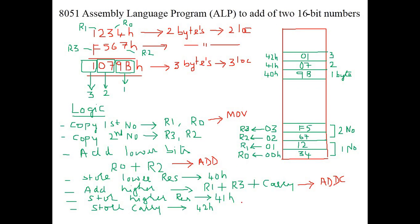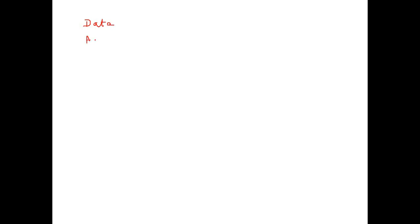Storing the result is also done using the MOV instruction. We need to understand the difference between specifying data and specifying an address in an instruction. When we specify data in the instruction it is treated as an immediate value, and when we specify an address, the content at that address is used. This distinction is important when writing 8051 instructions.